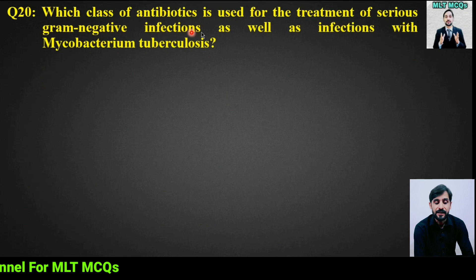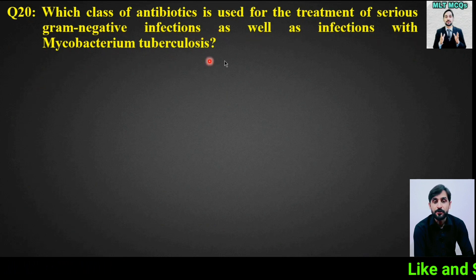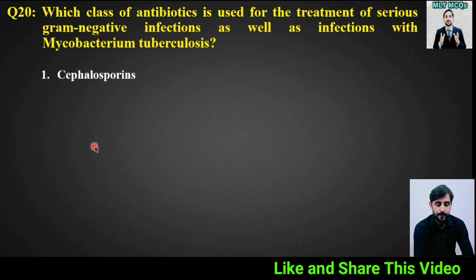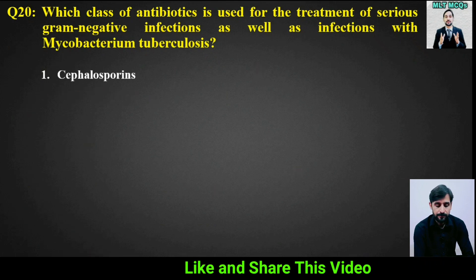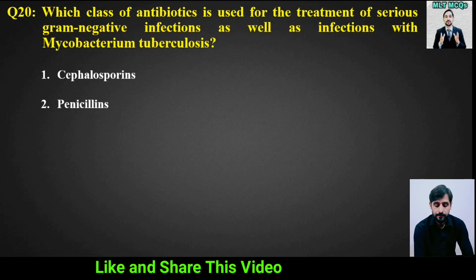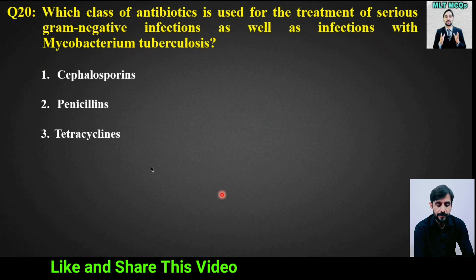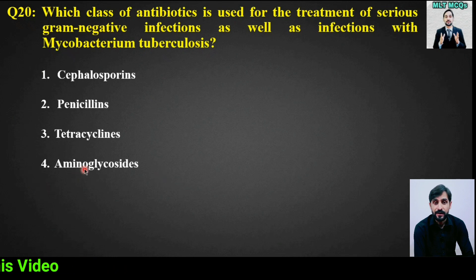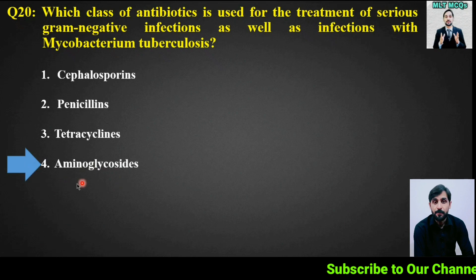MCQ number 20: Which class of antibiotics is used for the treatment of serious gram-negative infections as well as infections with Mycobacterium tuberculosis? Options: cephalosporins, penicillins, tetracyclines, or aminoglycosides. The right answer is option 4: aminoglycosides.